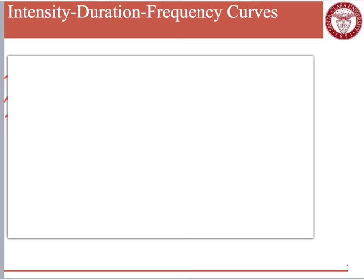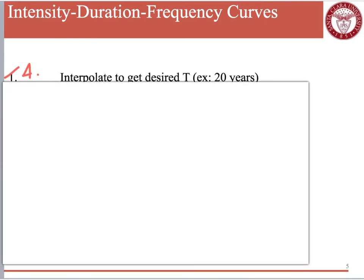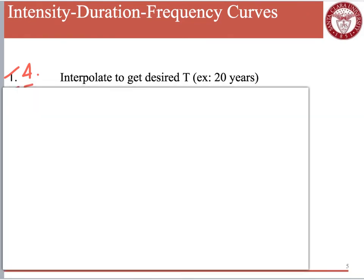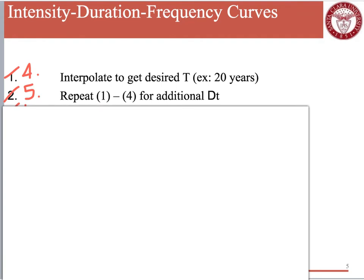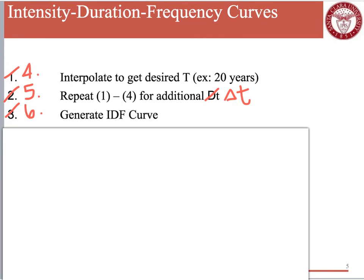We're not quite done yet. The next step is to interpolate to get our desired return period T. When we did our ranking, we didn't exactly find a 20-year storm, so we may have to interpolate between a 33-year storm and a 15-year storm to find the 20-year storm. Then you repeat steps one through four for any additional durations ΔT that you're interested in, and finally you generate your IDF curves.